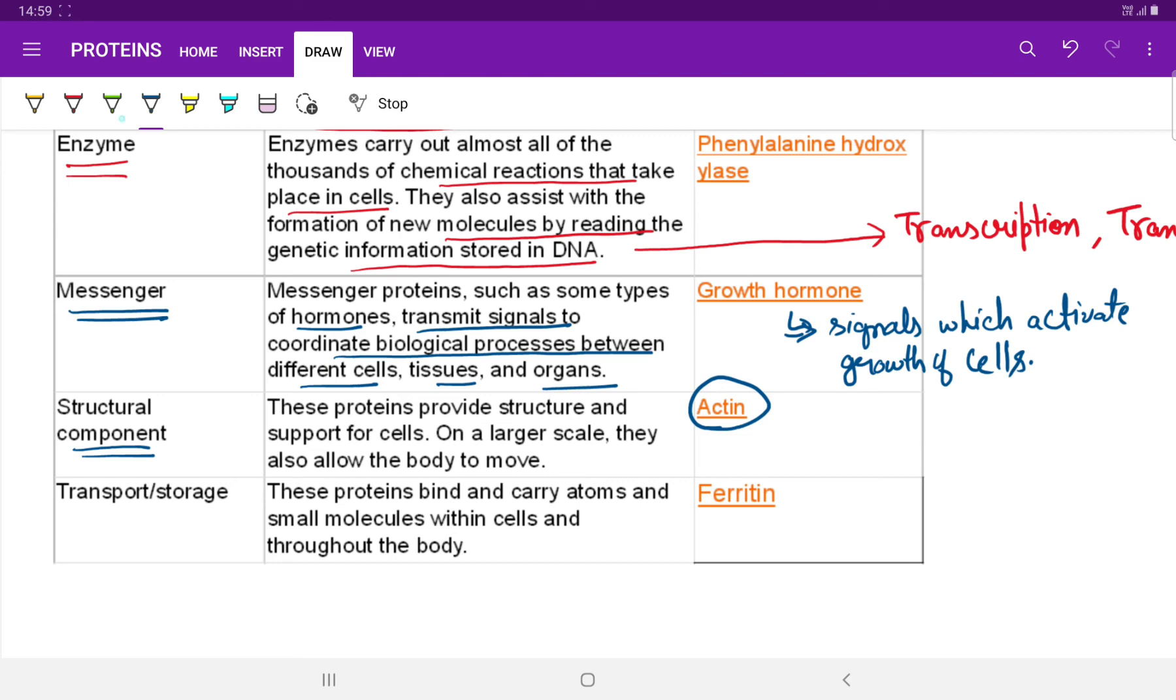Next comes the transport. The transport and storage. These proteins bind and carry atoms and small molecules within the cells and throughout the body, such as ferritin transport of iron that is involved in transport and storage of iron in spleen and liver. Hemoglobin helps to transport oxygen throughout the body.